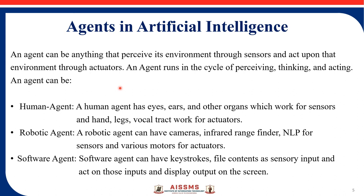An agent runs in the cycle of thinking and acting. An agent can be a human agent, robotic agent, or software agent. A human agent has eyes, ears and other organs which work like sensors. For example, if someone touches our hand, we can sense that. Legs and hands work as actuators.